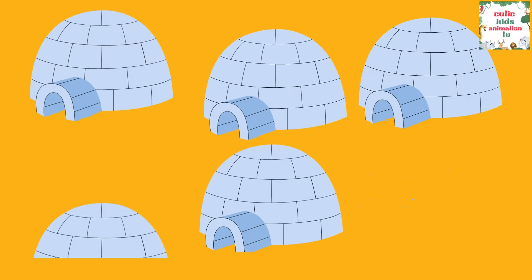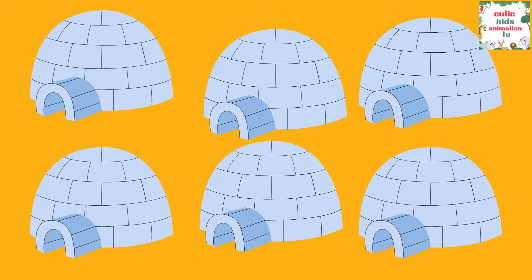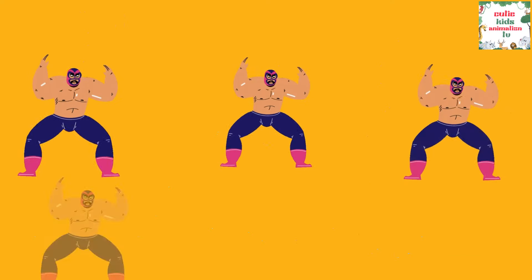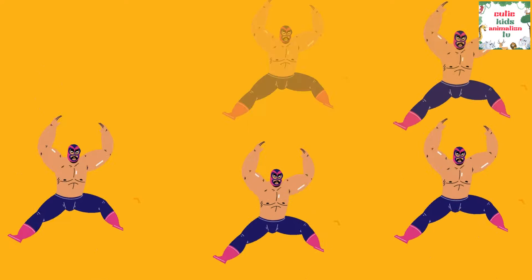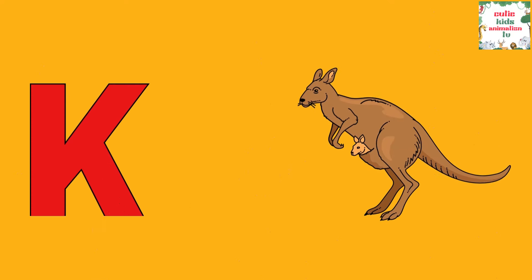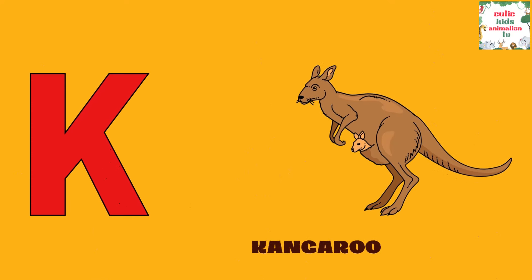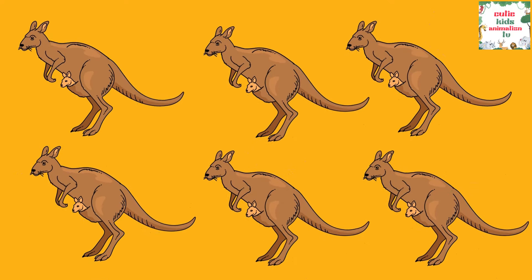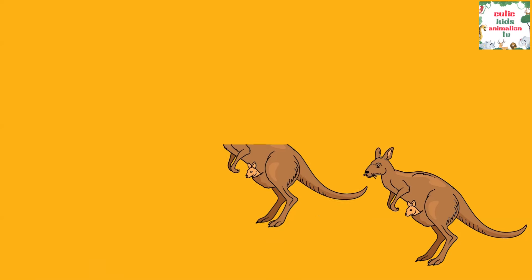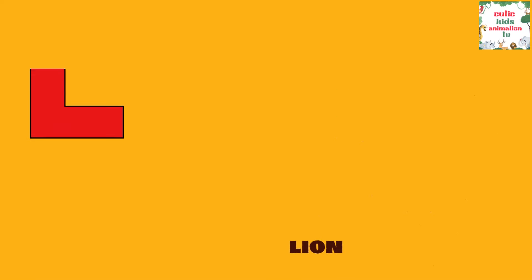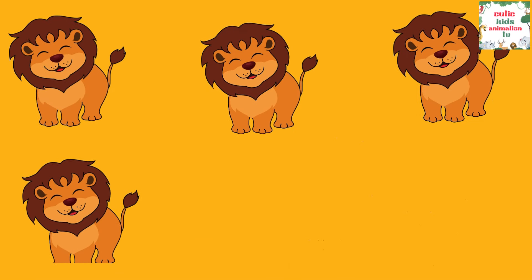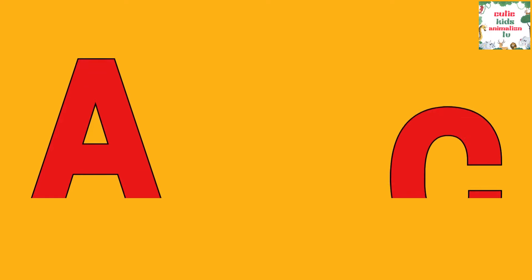I is for Igloo, I-I-Igloo. J is for Jump, J-J-Jump. K is for Kangaroo, K-K-Kangaroo. L is for Lion, L-L-Lion.